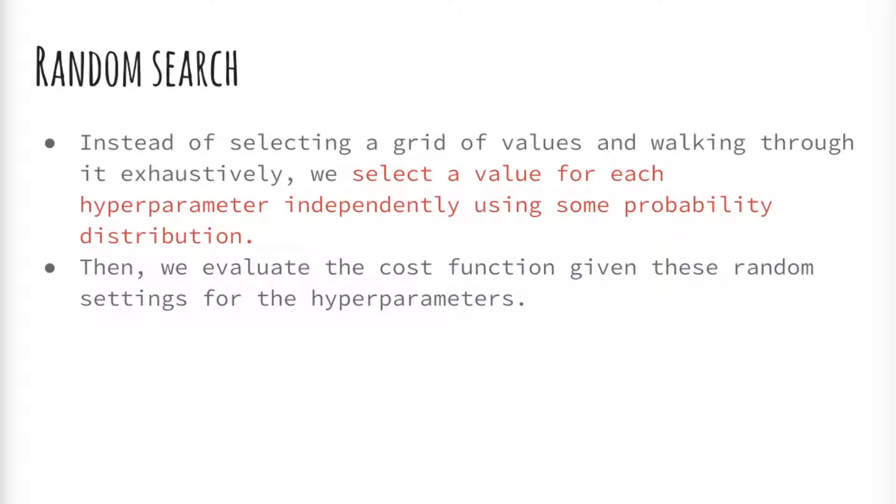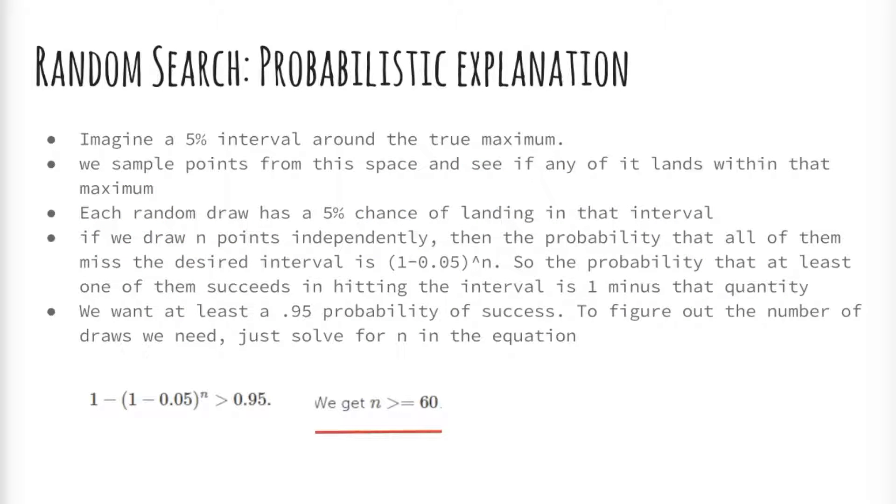Here is a probabilistic explanation of random search. Imagine a five percent interval around the true maximum. We sample points from this space and see if any of it lands within the maximum. Each random draw has a five percent chance of landing in that interval. If we draw n points independently, then the probability that all of them miss the desired interval is (1 - 0.05) raised to the n. So the probability that at least one of them succeeds in hitting the interval is one minus that quantity. We want at least a 95% probability of success. To figure out the number of draws we need, just solve for n in the equation on the slide. If the close-to-optimal region of hyperparameters occupies at least five percent of the grid surface, then random search with 60 trials will find that region with high probability.